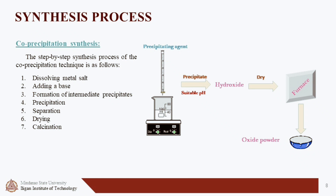Dissolving metal salts: dissolve the metal salt precursor, commonly nitric, chloride, or oxychloride, in water or another appropriate solvent. Adding a base: add a base such as sodium hydroxide or ammonium hydroxide to the metal salt solution to precipitate the corresponding hydroxide. Formation of intermediate precipitates: the aim of precipitation is to prepare multi-component materials through the formation of intermediate precipitates, usually hydroxides or oxalates, to achieve an intimate mixture of components and maintain chemical homogeneity upon calcination.